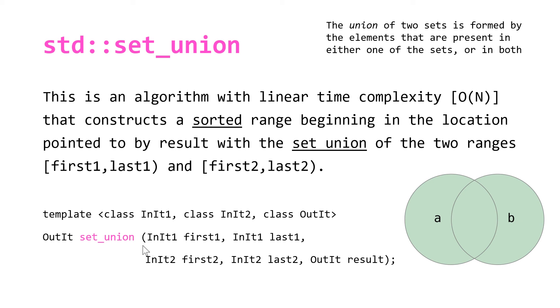You can see here for our function declaration we've got set_union. It returns an output iterator and takes four input iterators pointing to the beginning and end of our first range and the beginning and end of our second range, and then also our output iterator result where our sorted range is going to be constructed.